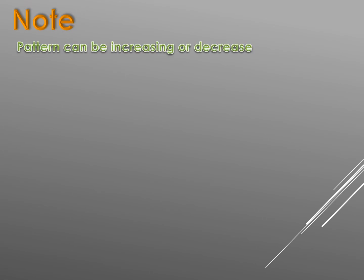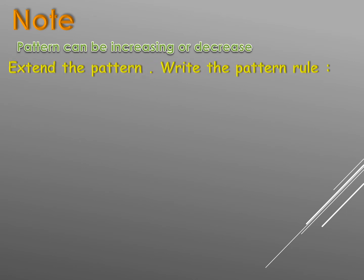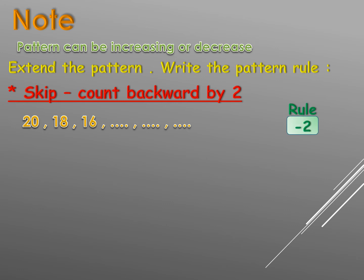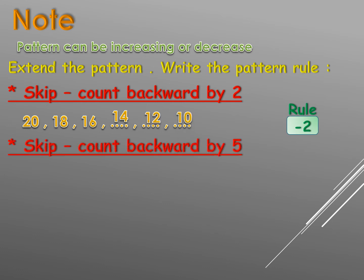Note that patterns can increase — that means plus — or decrease — that means minus. Now extend the pattern and write the pattern rule: skip counting backward by two. Twenty, backward two will be eighteen, backward two will be sixteen. Our rule is minus two. After sixteen: sixteen minus two equals fourteen, fourteen minus two equals twelve, twelve minus two equals ten.